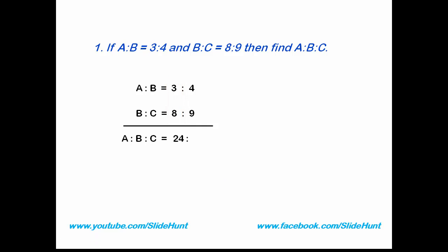Next, find which variable is common in two ratios. Here variable B is common in two ratios. In first ratio, B is 4 and in second ratio, B is 8. So multiply these two numbers: 4 times 8 is 32. And then multiply these two numbers: 4 times 9 is 36. Now simplify it. Divide all of these three numbers by 4: 24 divided by 4 is 6, 32 divided by 4 is 8, and 36 divided by 4 is 9.